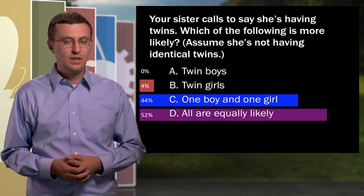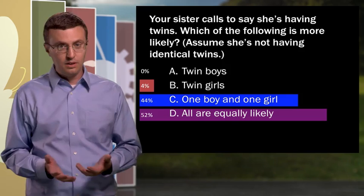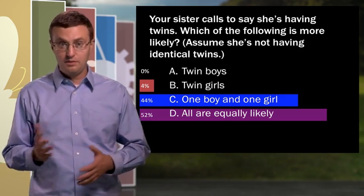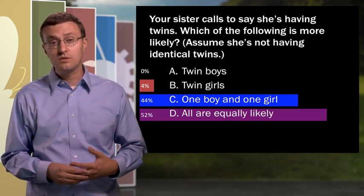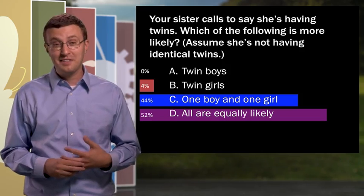Then we run a simulation. I ask each student to take out a coin and flip it twice, heads for boys, tails for girls. I ask the students to report their results using their clickers, and we get a bar graph something like this.